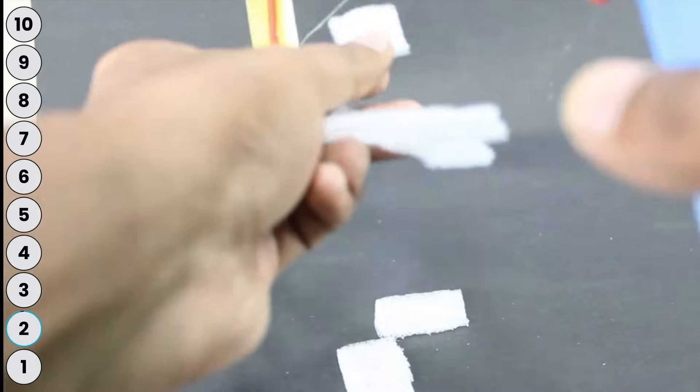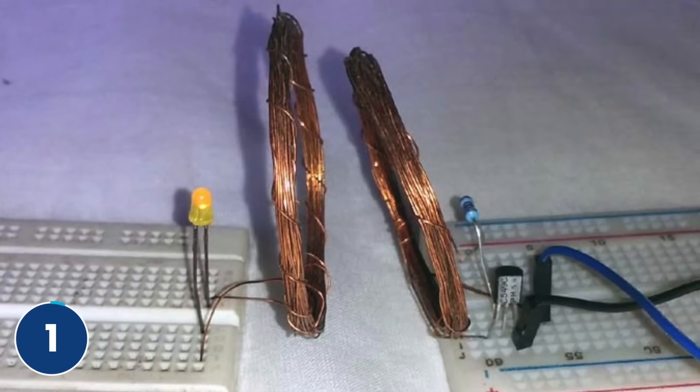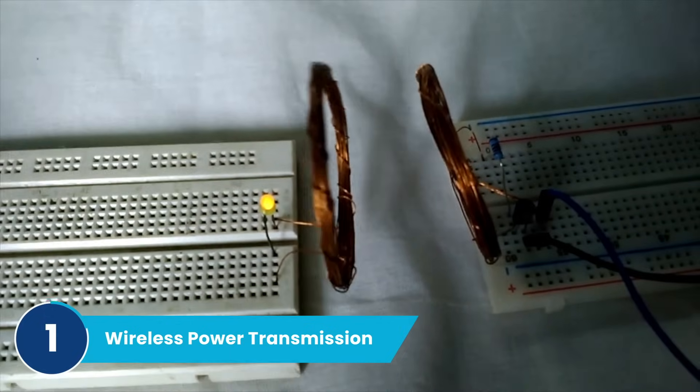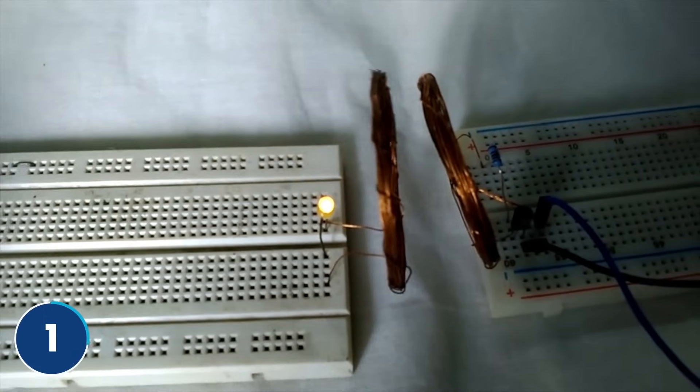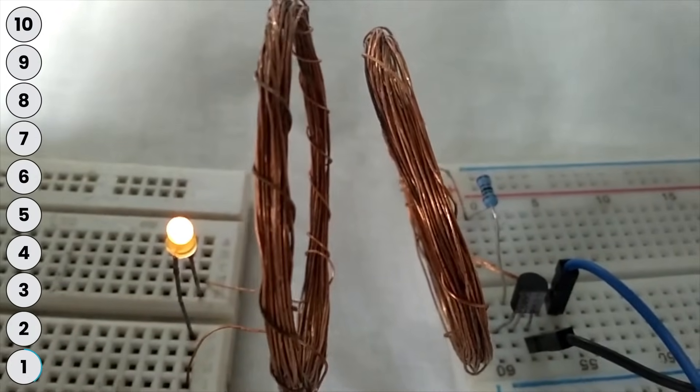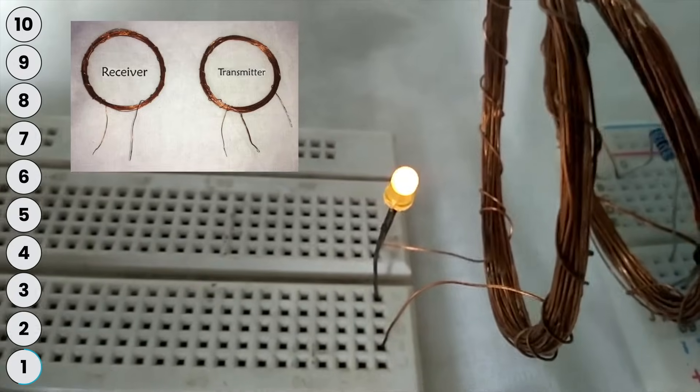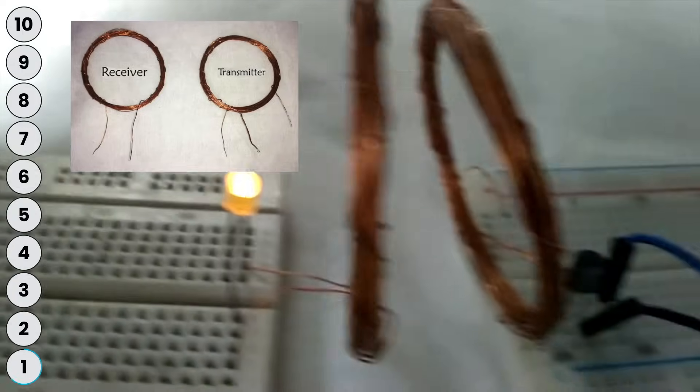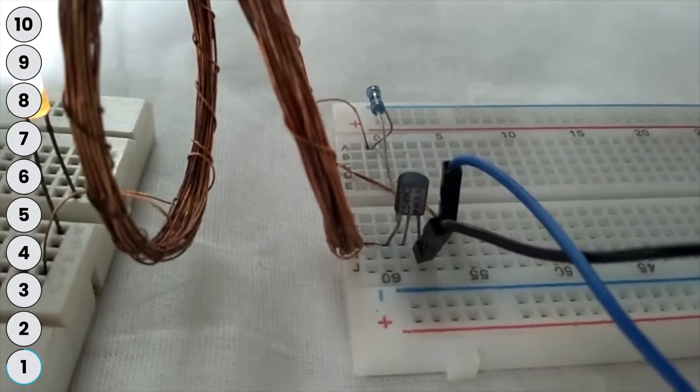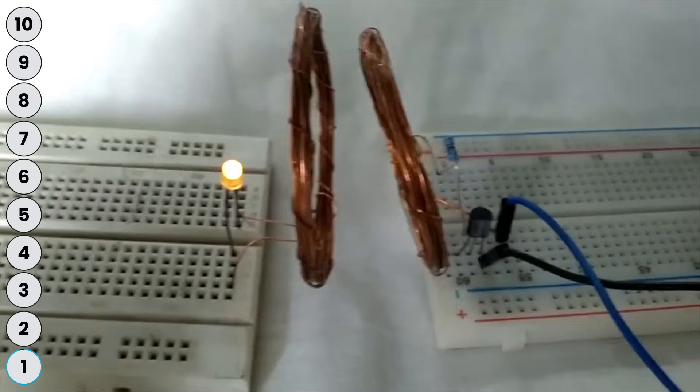Finally, coming on at number one, we have the wireless power transmission circuit. Now it might sound very complicated, but it is really easy to build. All you need is two pairs of copper enameled wires acting as transmitter and receiver, and you can build this circuit easily with an LED and a BC547 transistor. It takes very less time to build and the working looks really cool to demonstrate.